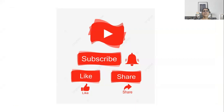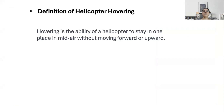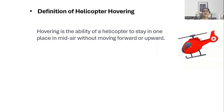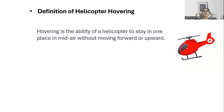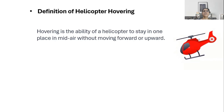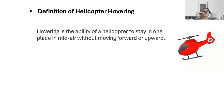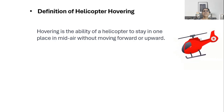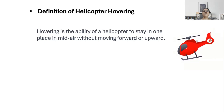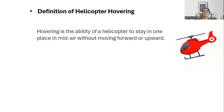Let's start with the definition of hovering. What is hovering? Hovering is basically the ability of the helicopter to stay in one place in midair, neither moving up or down. It's going to be stationary, and this ability of the helicopter to stay in one place is called hovering.